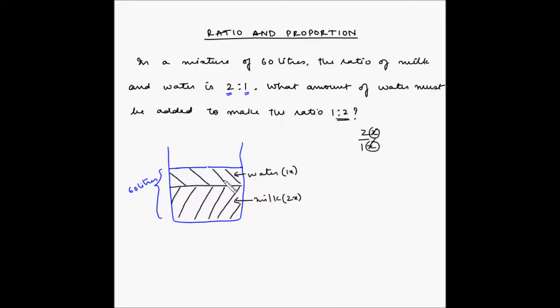So, right now milk is double the water because milk is 2 times x and water is 1 times x. Now, what we want to do is we want to make milk as half of the water. So basically, what we want to do is we want to make water as double of milk.